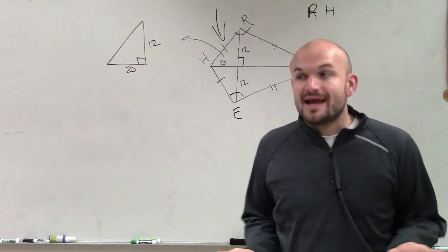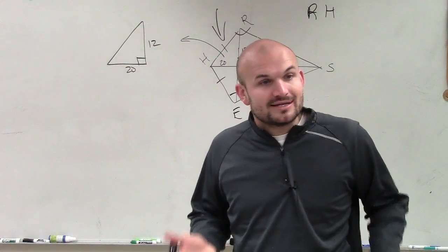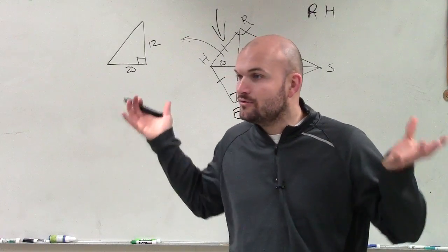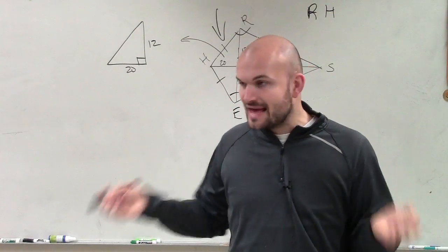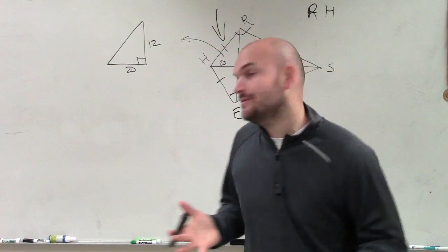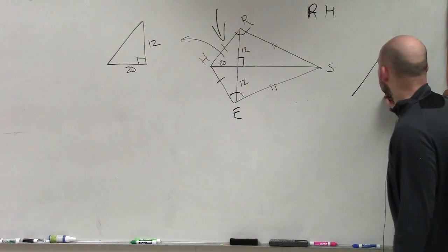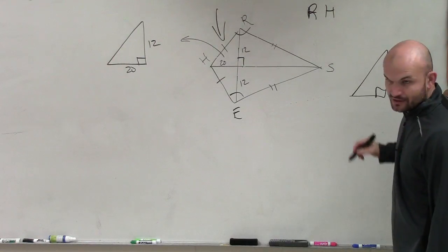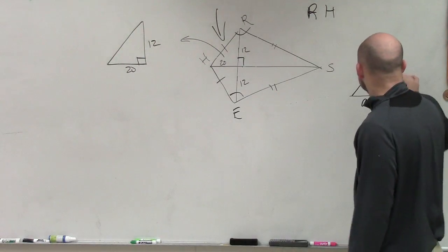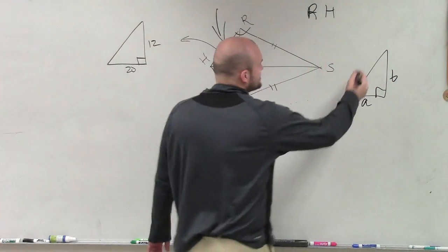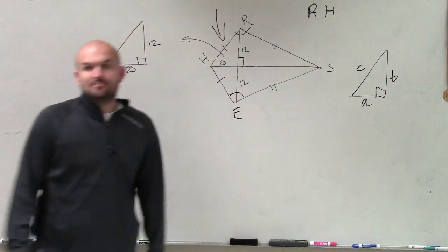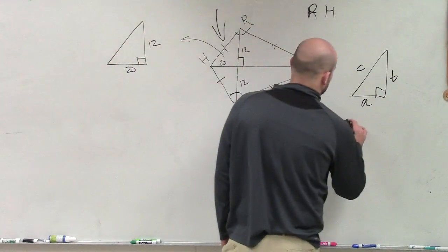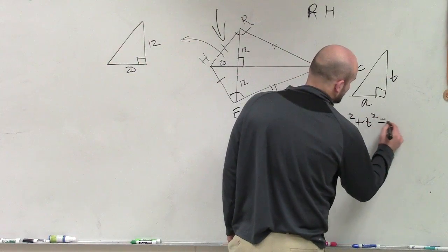So now we have a right angle. And one of the first things we told you about, when you have a triangle that has a right angle, we can apply which theorem? Pythagorean theorem. And the Pythagorean theorem says if we have a triangle that is a right triangle, and we have two legs, which we'll call A and B, and a hypotenuse C, the relationship between the length of the sides is going to be A squared plus B squared equals C squared.